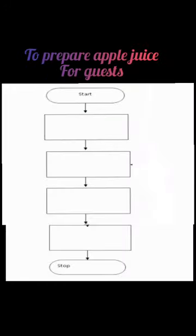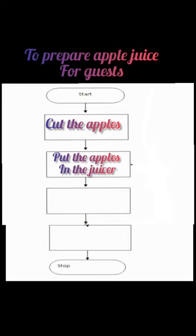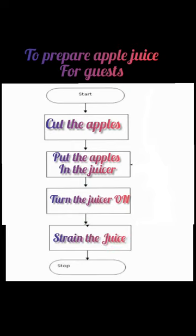So now, draw a flowchart in your notebook. First exercise: prepare apple juice for guests. Steps: first, cut the apples; second, put the apples in the juicer; third, turn the juicer on; and fourth, strain the juice.